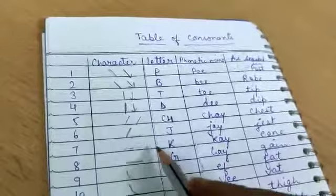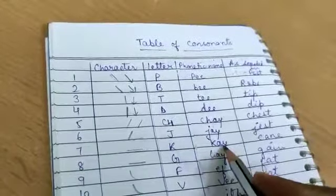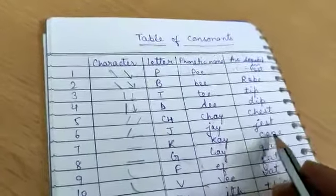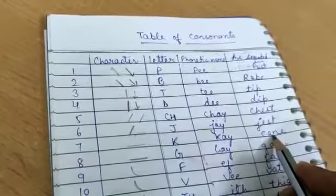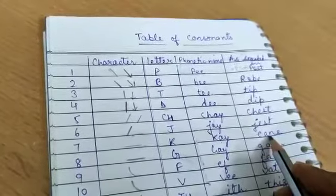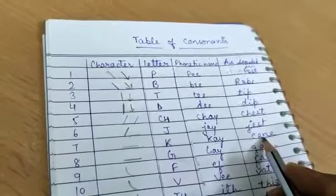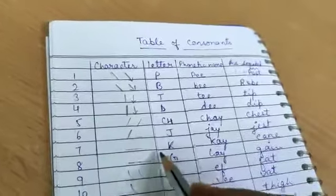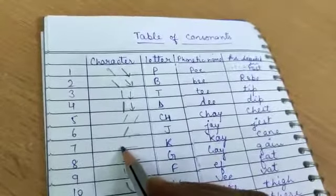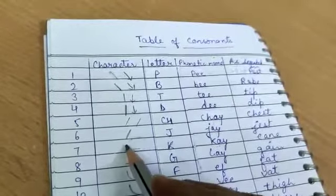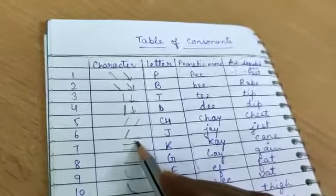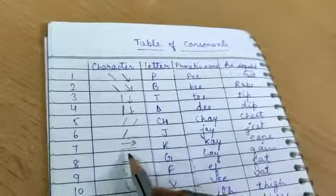Then we have K. Phonetic name is K. And as you can see, the spelling is C-A-N-E. But the sound is Cain. So, for K, we have this outline. This is made in left to right. Left to right motion.